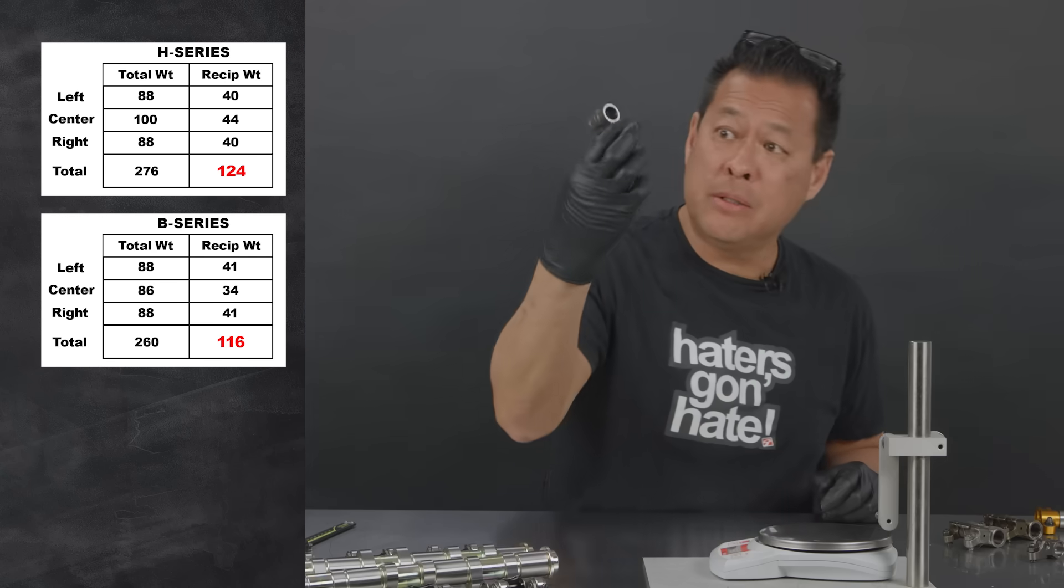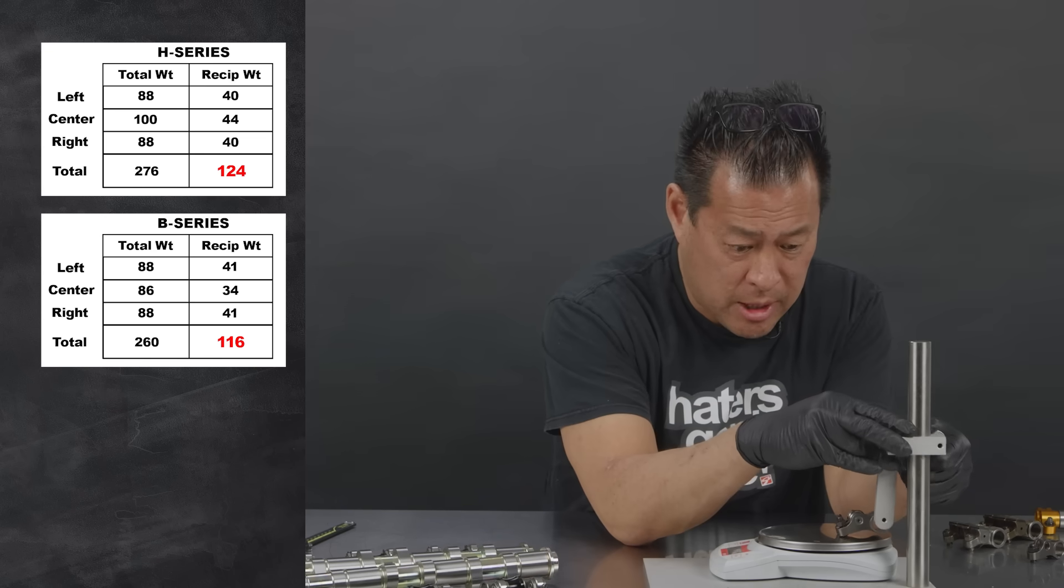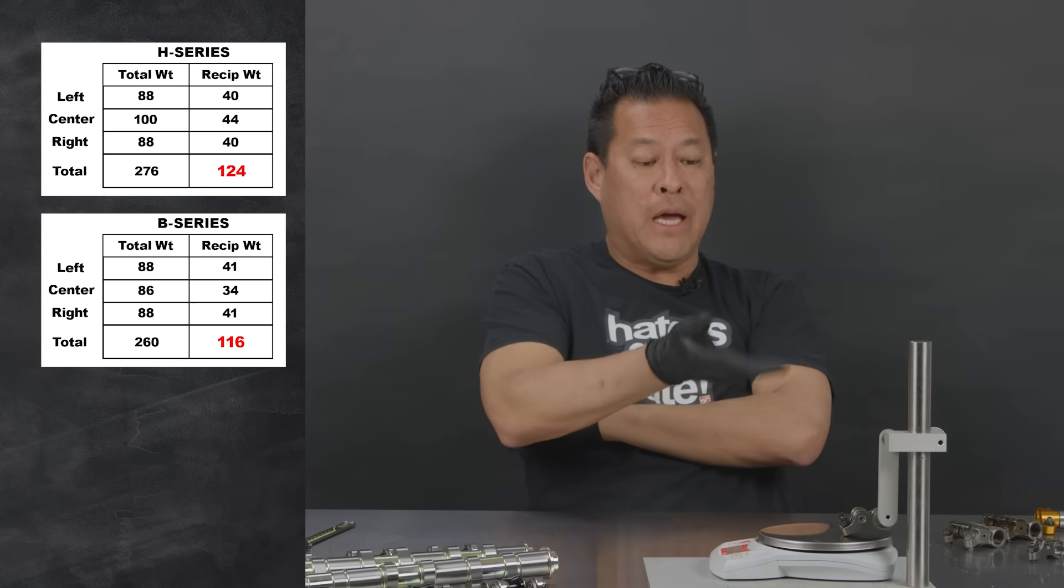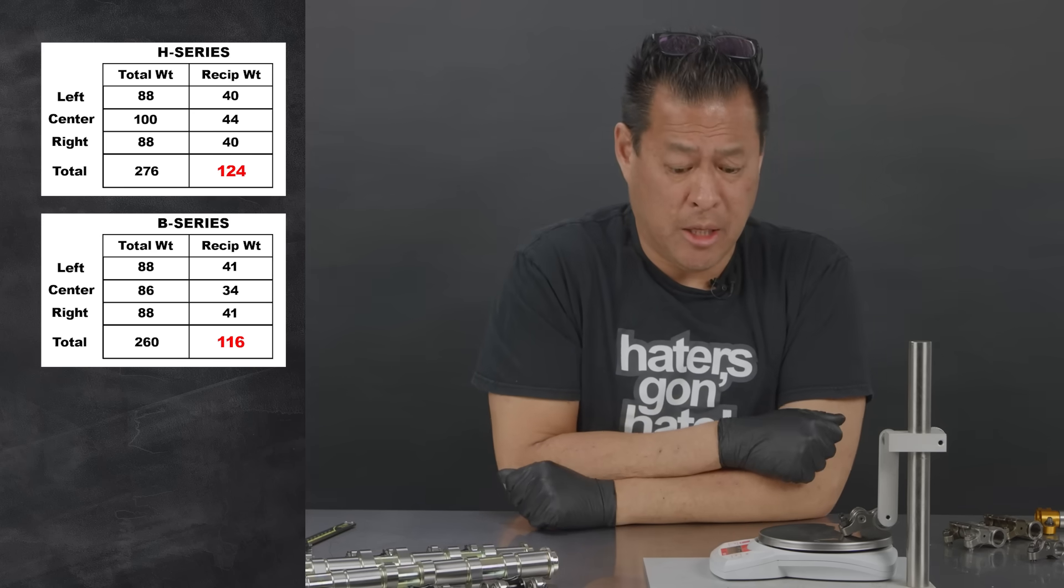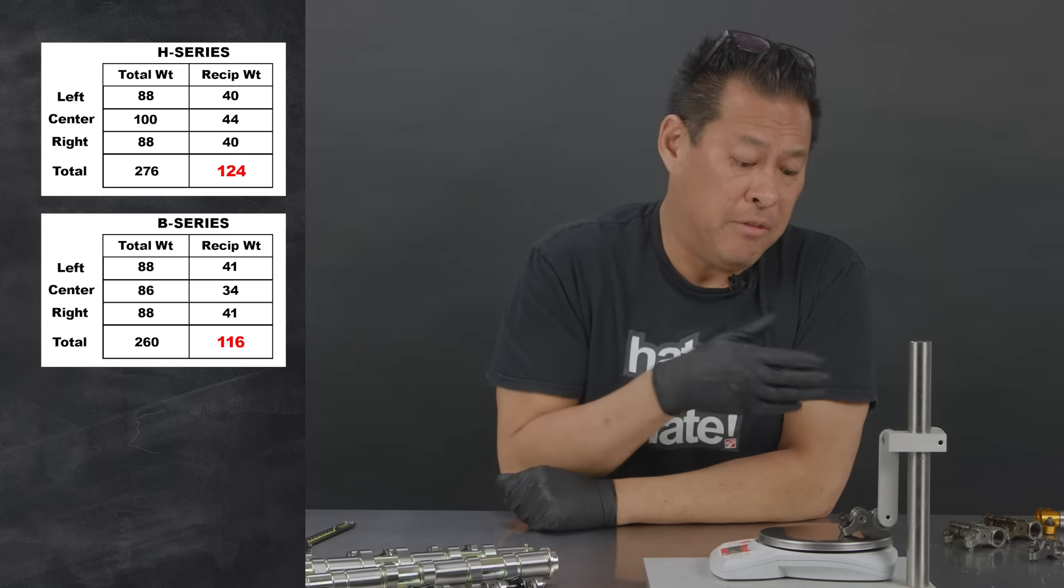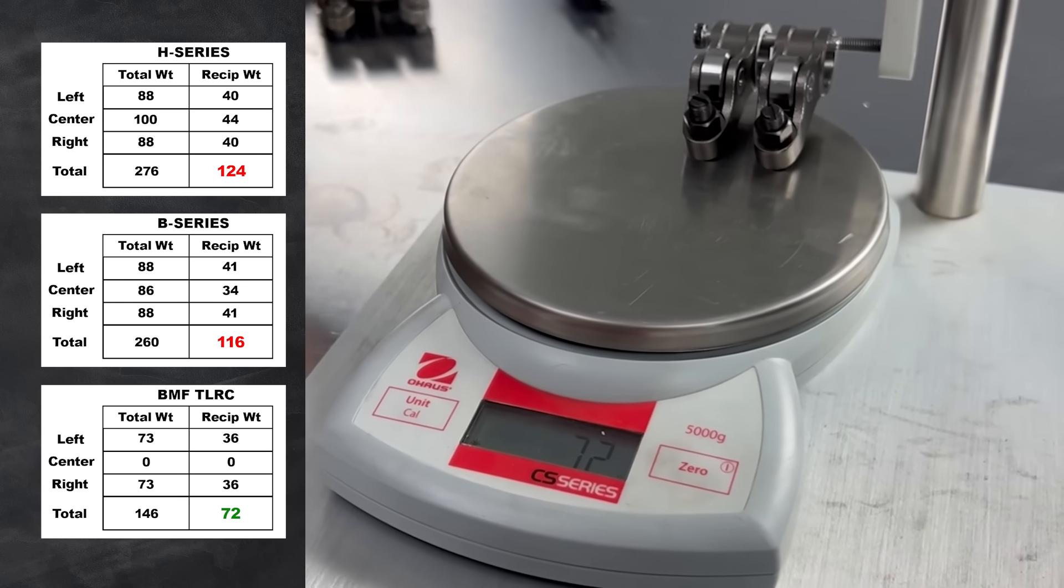The last one, I'll do two of these TLRC rockers. Here we have the two TLRC rockers and if you look at the reciprocating weight it's only 72 grams.